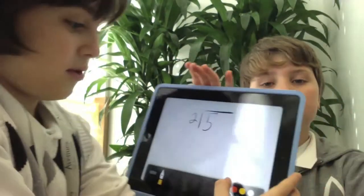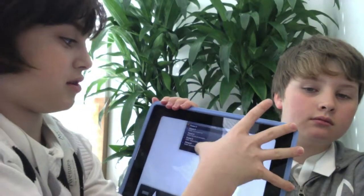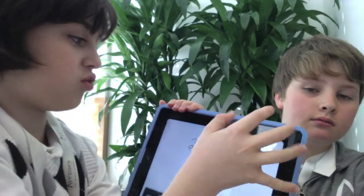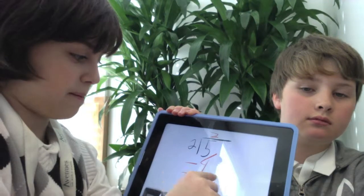Five divided by two, it goes in twice, and then we subtract four to get one.